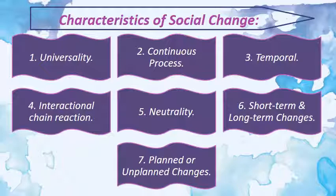7. Planned or unplanned change: The direction and tempo of social change are often conditioned by human engineering. Plans, programs and projects may be launched by man to determine and control the rate and direction of social change. Unplanned change refers to change resulting from natural calamities such as famines, floods, earthquakes, and volcanic eruptions. When such disasters occur, there is loss of human and animal life and property. Some purposeful and planned changes are promoted by the government or other agencies, for example planned cities in India.